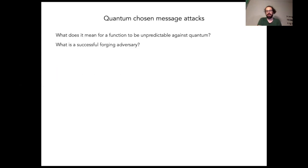So we cannot generalize UFCMA in a straightforward manner, but then how can we judge whether a function is unpredictable for quantum algorithms? How do we identify a successful forging adversary?